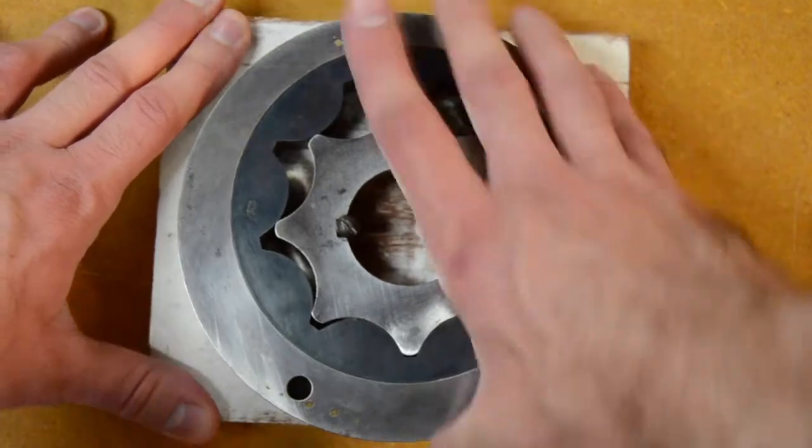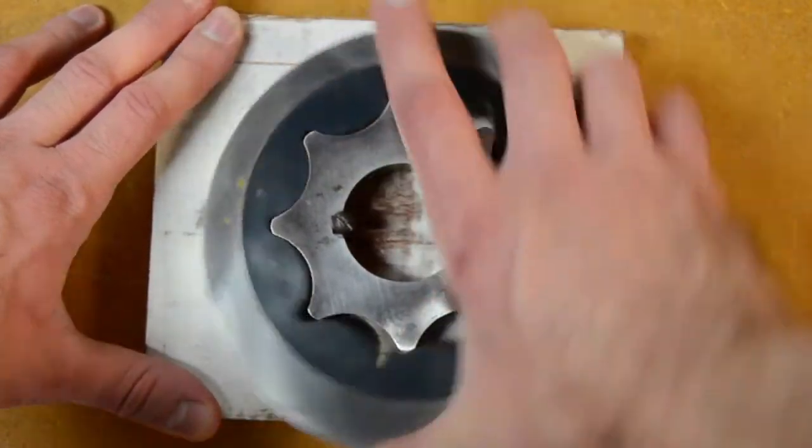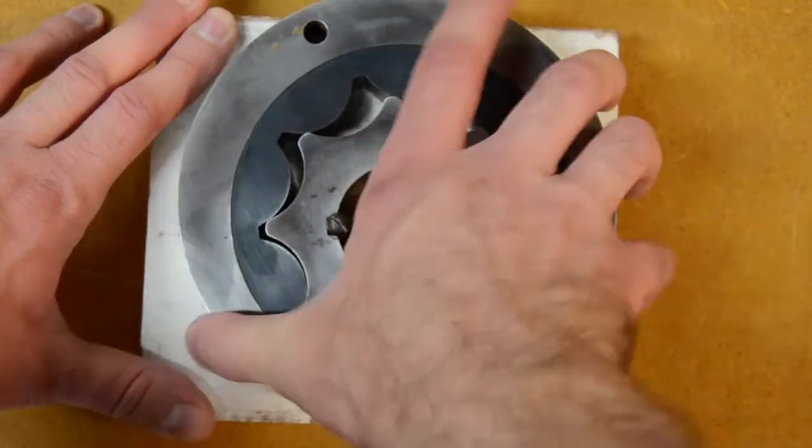As the rotors rotate about their respective axes, the spaces where their cogs would mesh continuously increase and decrease.